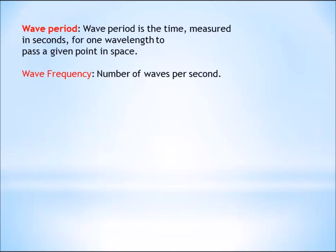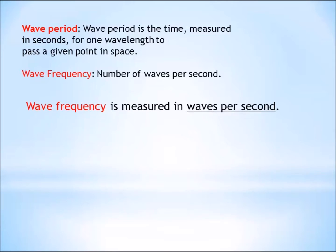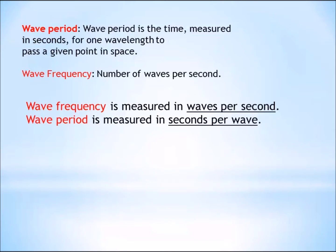Here are some of the things that we should know up to this point — two definitions. Wave period is the time measured in seconds for one wavelength to pass a given point in space. Wave frequency is simply the number of waves per second, measured in Hertz, cycles per second, or waves per second. Wave frequency is measured in waves per second, and wave period is measured in seconds per wave.